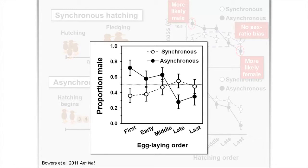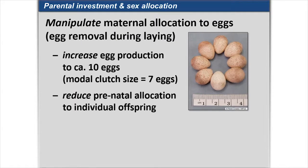Initially we predicted that early-hatched eggs should more likely contain boys than girls, and younger siblings should more likely be female, whereas within synchronously hatched broods — where nobody has a competitive advantage — we expected no sex ratio bias across the laying sequence. This is more or less what we found. Within synchronous nests, none of the means differ statistically from each other or from a one-to-one sex ratio. But first-laid eggs within asynchronous broods are more likely to produce sons than daughters, and later-laid eggs are more likely to produce daughters. This was a purely observational study with no manipulation.